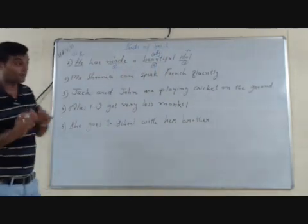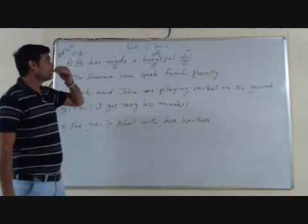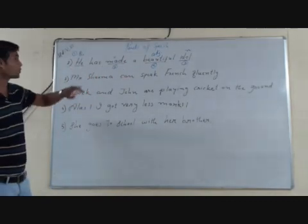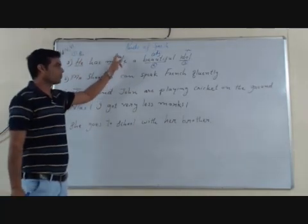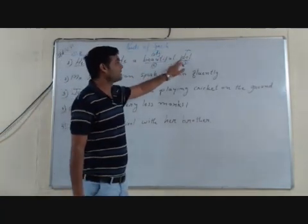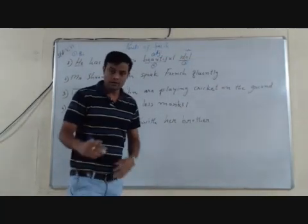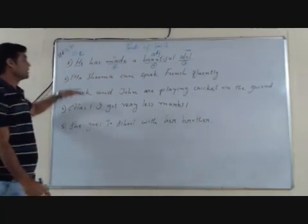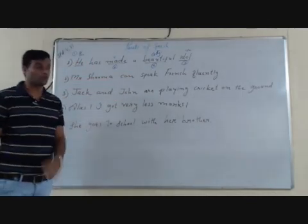So in the very first sentence — he has made a beautiful idol — we have four parts of speech: 'he' is a pronoun, 'made' is a verb, 'beautiful' is an adjective, and 'idol' is a noun. Let's move to the second sentence: Mr. Sarma can speak French fluently.